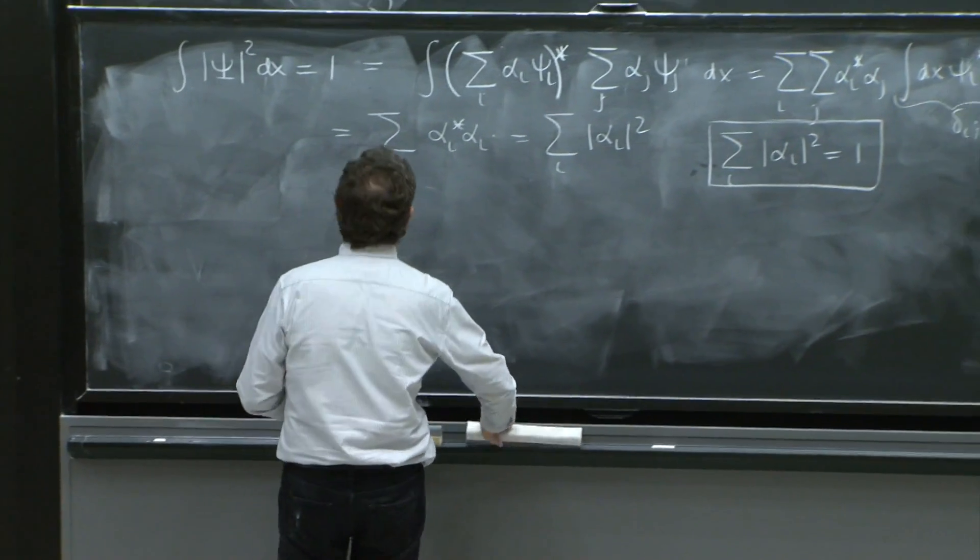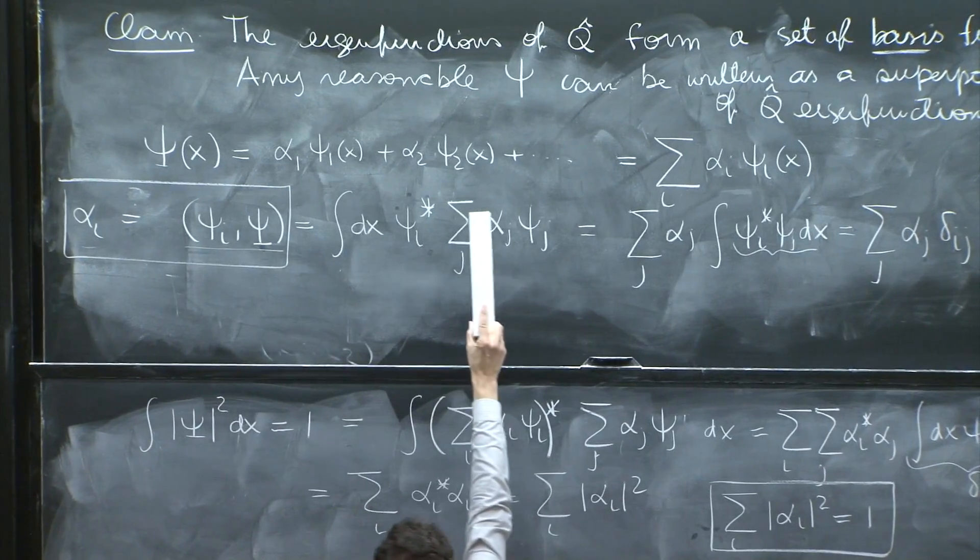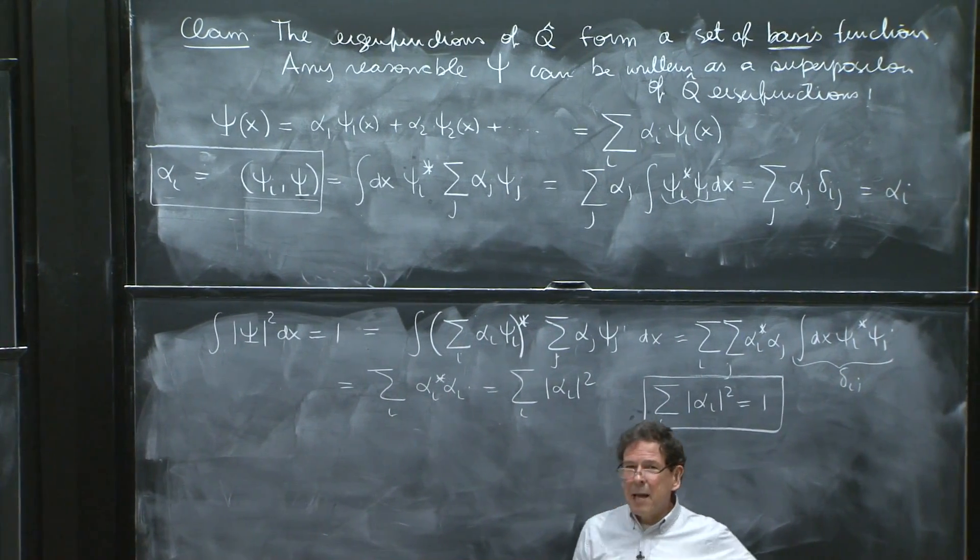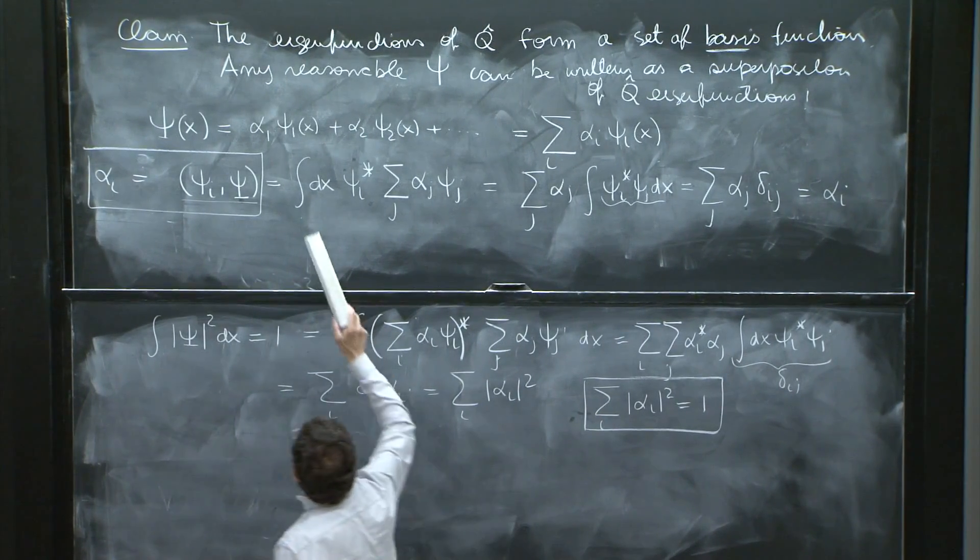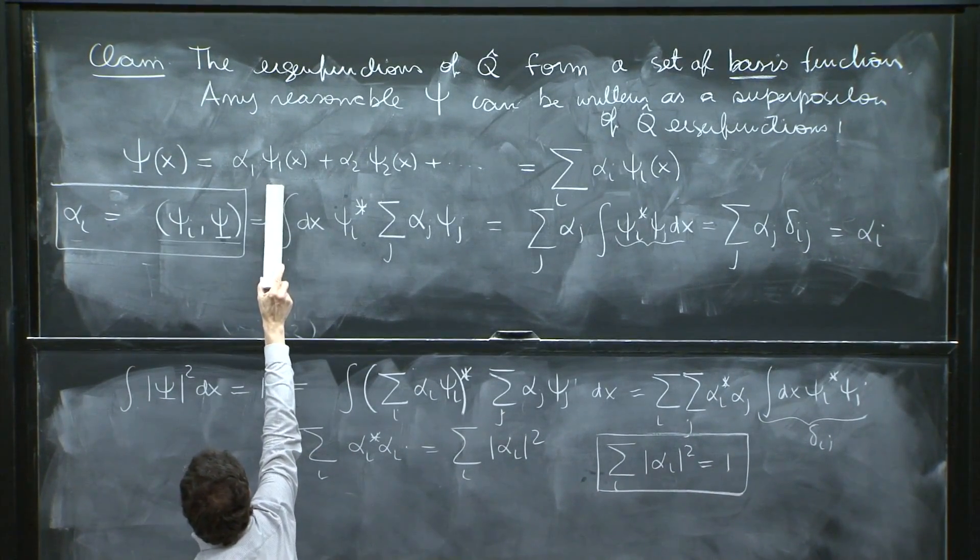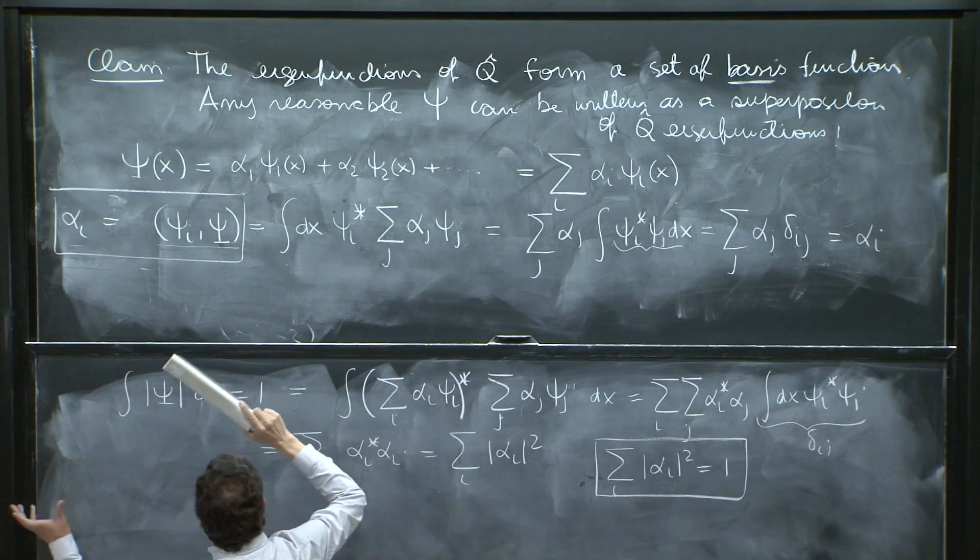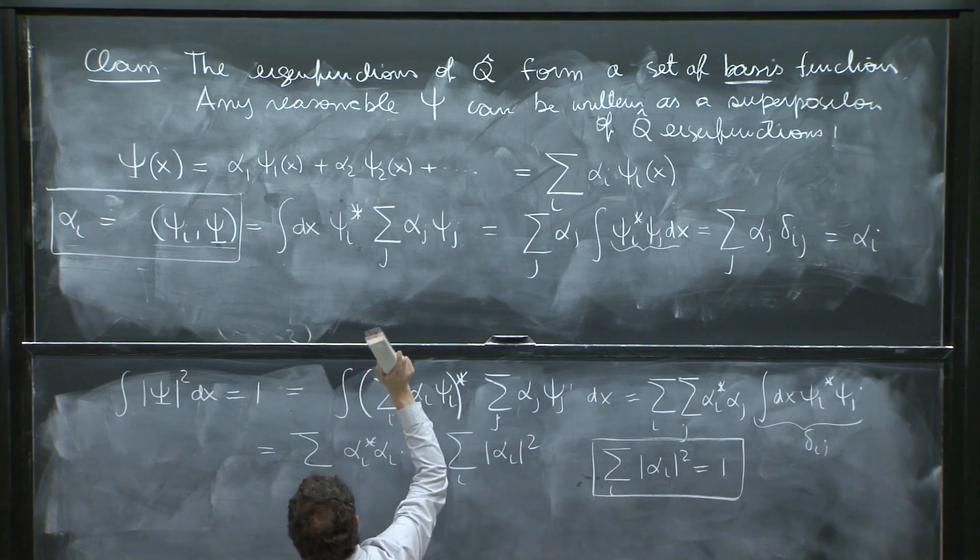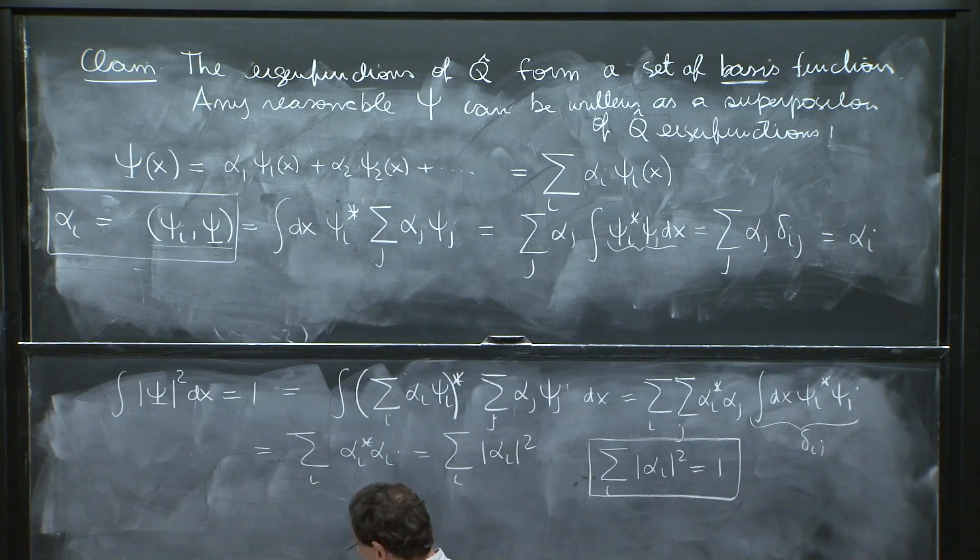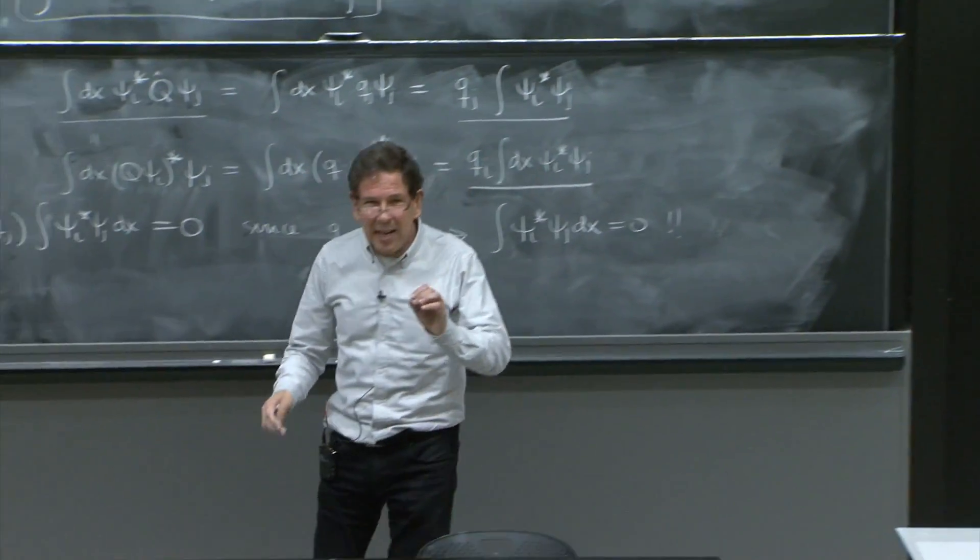And you must, in a sense, rewrite your state as a superposition of the eigenfunctions with those alphas. And the probability to measure q1 is the probability that you sort of end up on this part of the superposition. And it will be given by alpha 1 squared, norm squared. The probability to measure q2 will be given by alpha 2 squared and all these numbers.